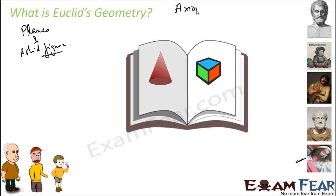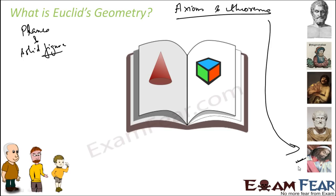This study is based on axioms and theorems. Euclid compiled all these axioms and theorems. Now, why do we say 'Euclid geometry' and not just 'geometry'? Because until the 19th century, geometry was Euclid geometry — there was only one version. But during the 19th century, a non-Euclidean geometry also evolved.